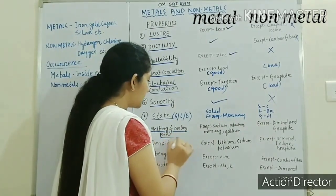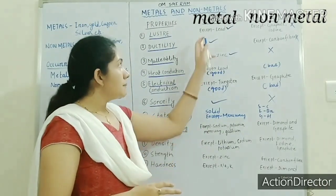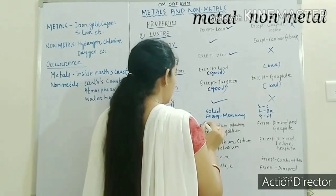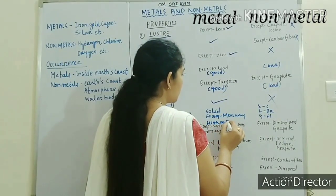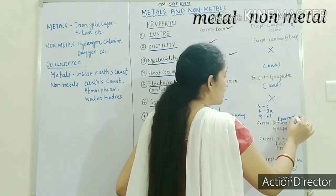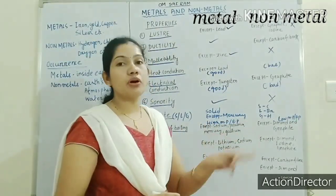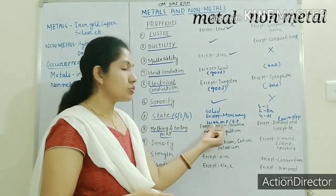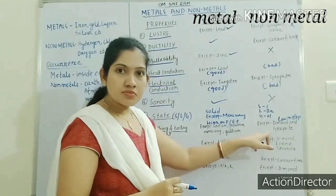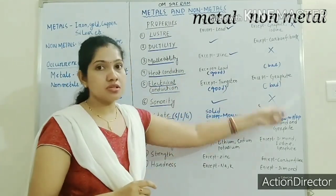Next is melting and boiling point. Metals have high melting and boiling points. Non-metals have low melting and boiling points. Exceptions for metals: sodium, potassium, mercury, and gallium have low melting and boiling points. Exceptions for non-metals: diamond and graphite are two non-metals with high melting and boiling points. Remember these exceptions — they are very important.